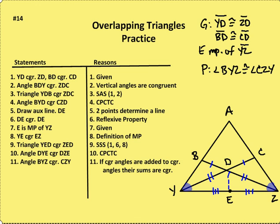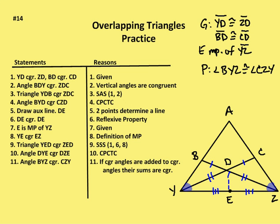Angle BDY is congruent to angle CDZ because vertical angles are congruent. Now I have triangle YDB congruent to triangle ZDC by side-angle-side — using YD≅ZD, BD≅CD, and angle BDY≅angle CDZ. I have two triangles that are congruent.